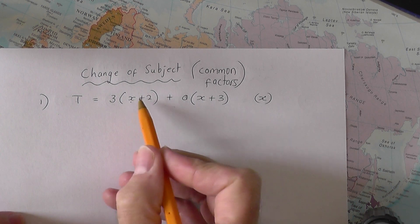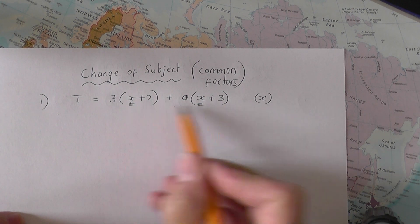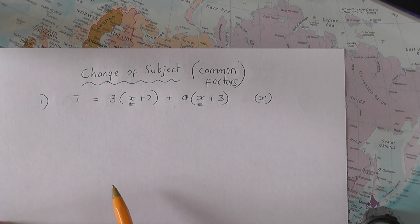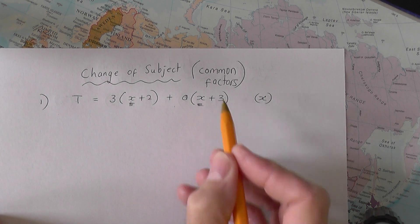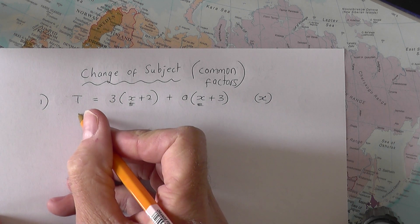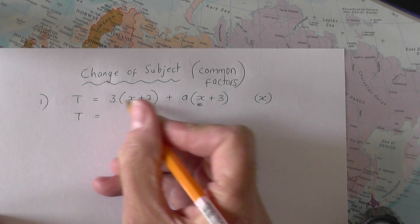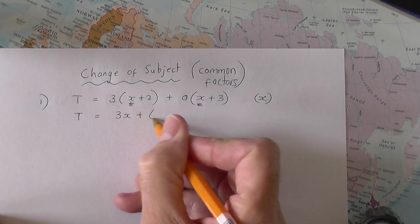OK, so X you can see is there and X you can see is there. So on the right hand side X appears twice. So what we're going to do is the following. You can see a bracket there and a bracket there. We're going to expand out the brackets. T equals three times X is three X plus three times two is six.